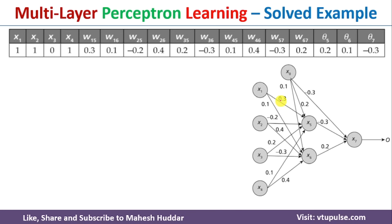The weights are also given to us, represented in this table. W15 — the weight from x1 to x5 — is 0.3. W16 — the weight from x1 to x6 — is 0.1. With the same notation, all initial weights are written. Theta 5 is the weight from bias x0 to x5, and theta 6 is the weight from x0 to x6; they are 0.2 and 0.1 respectively. Theta 7 is the weight from the bias to x7, which is minus 0.3.